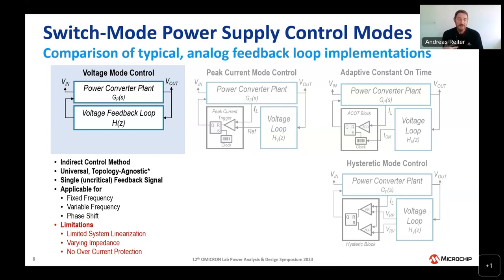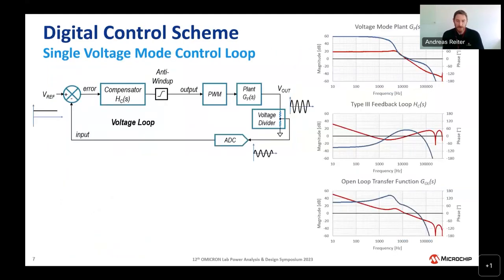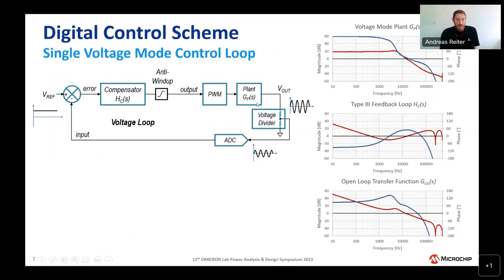Because we don't look at current, we don't see when it goes out of bounds — there's no built-in overcurrent or short-circuit protection. These are good reasons to move to current mode. Looking at the voltage loop block diagram: we sample the output voltage through a voltage divider, bring it down to the ADC reference voltage range, and the ADC converts the value and delivers it to a digital error amplifier.